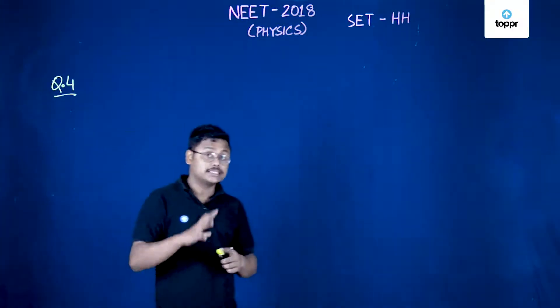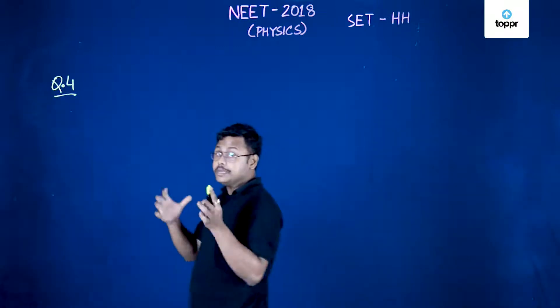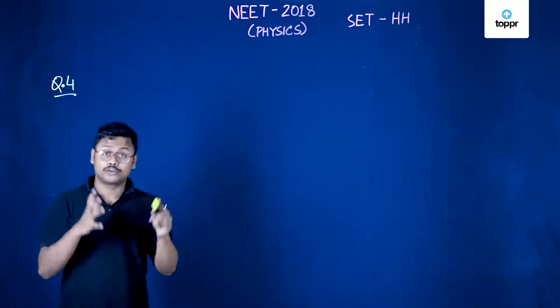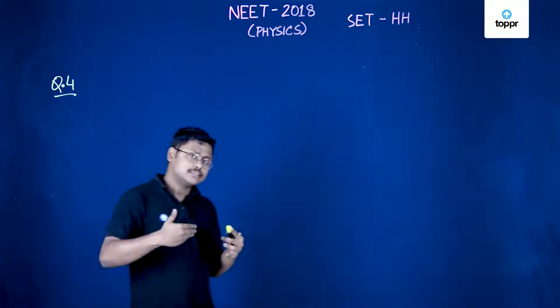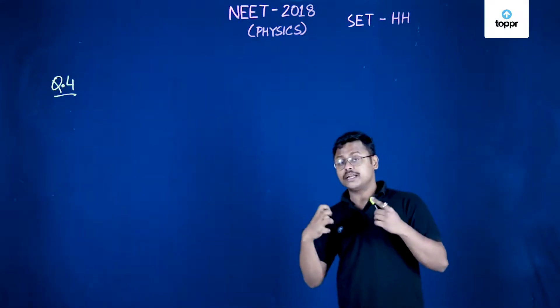Hello students, now we will discuss question number 4. When a diamagnetic material is placed between the poles of an electromagnet, as soon as current is passed to the electromagnet, what will happen?